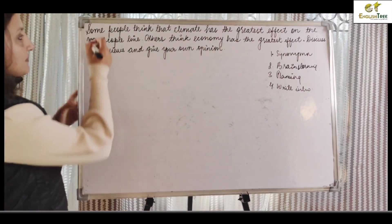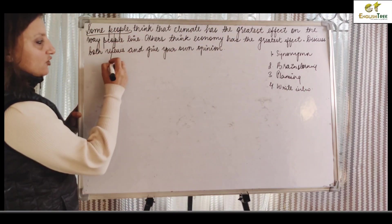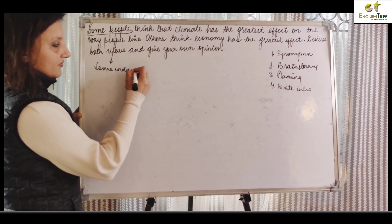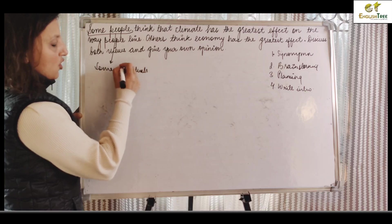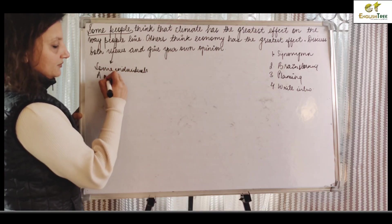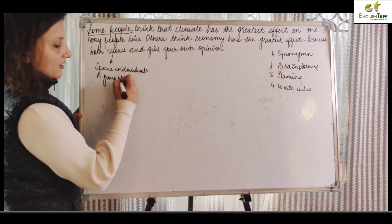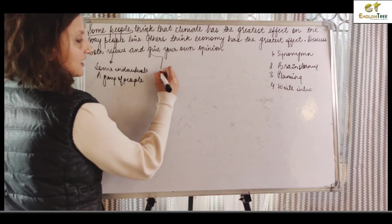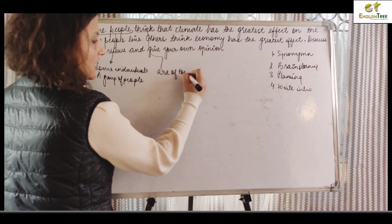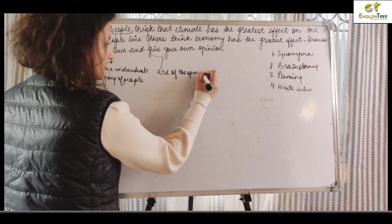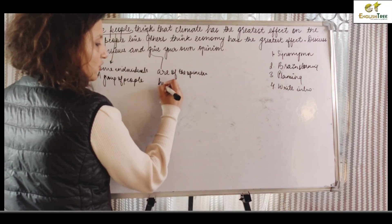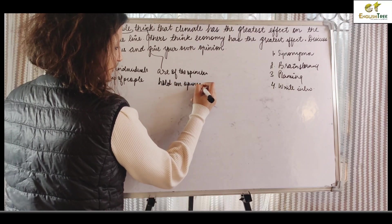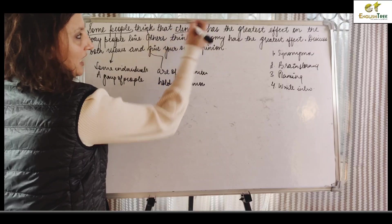So first and first, let's see. Some people think - we can always write some individuals or a group of people. Think - how can we write? Are of the opinion. Climate - how can we write climate, right?